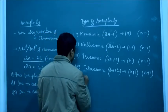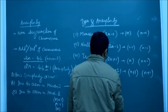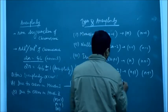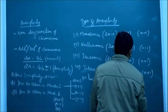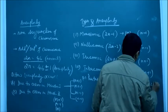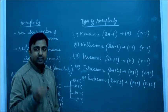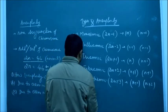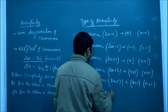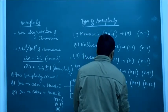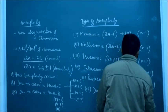Fifth is pentasomic, that is 2n plus 3, occurring due to fusion of an n plus 1 gamete and an n plus 2 gamete. There is an assignment for you: the sixth condition is double monosomic, represented as 2n minus 1 minus 1.